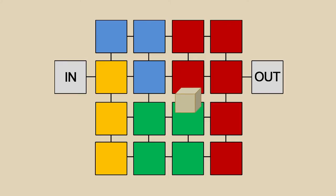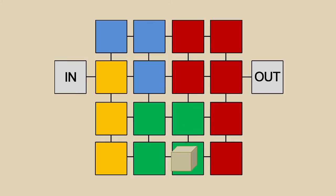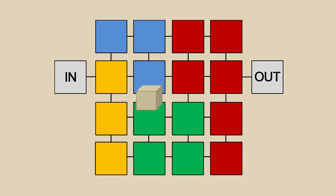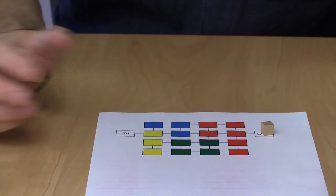We have to switch to green again, then yellow — one, two, three — then blue, back to green, and finally to red and out.